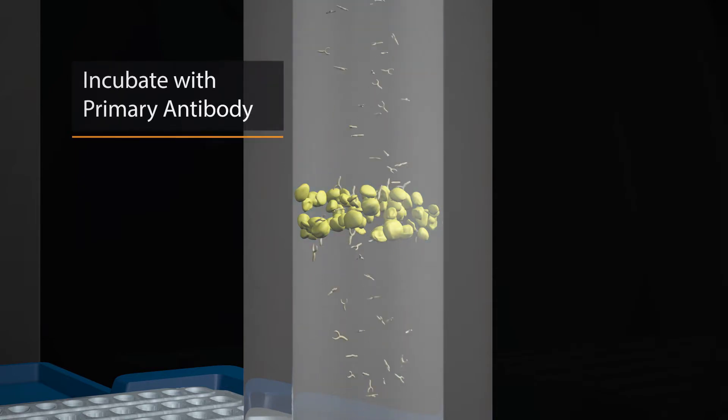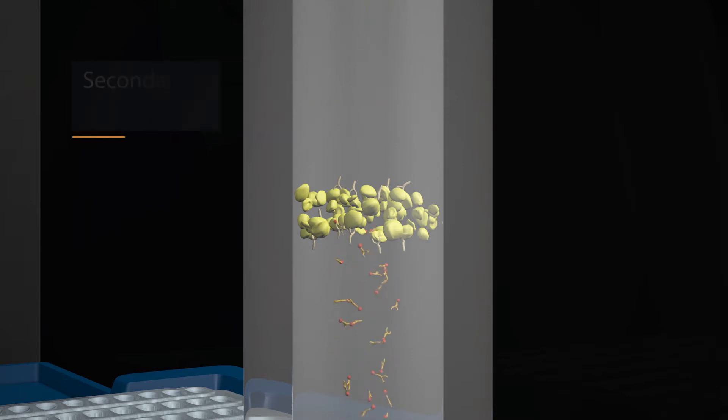Wes first incubates with your primary antibody of choice, followed by a secondary HRP conjugate, and finally, chemiluminescent substrate.